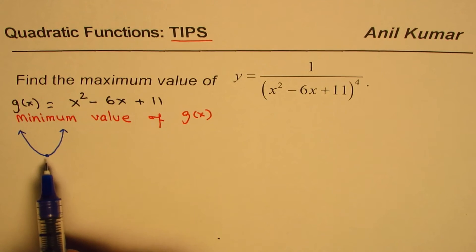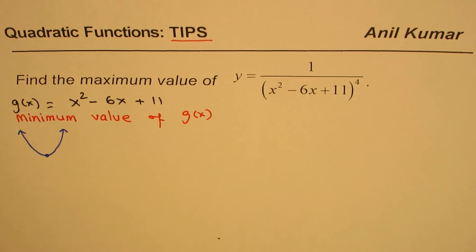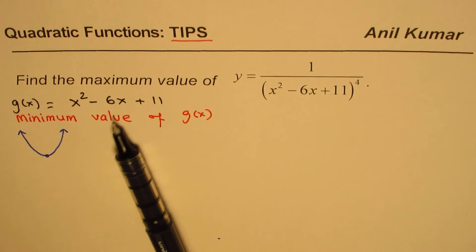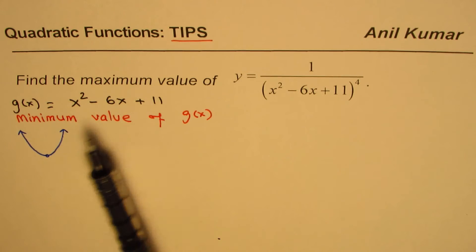So, that minimum value, if I substitute here, I get the maximum value. Do you see that? So, that is the whole concept. Is it okay? So, we will now convert this equation into a form so that we can find the minimum value.